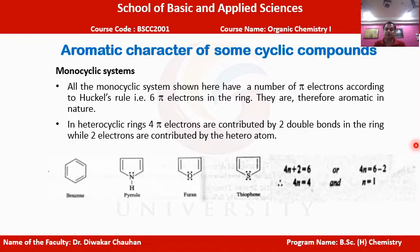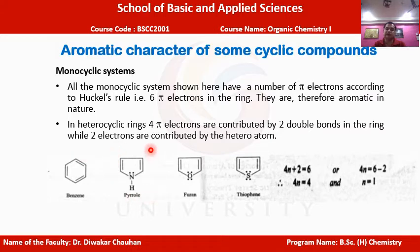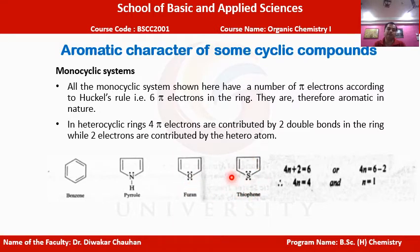Now let us discuss the aromatic character of monocyclic systems. Monocyclic systems are those in which atoms combine to form a closed cyclic ring, as in benzene. Heterocyclic compounds like pyrrole, furan, and thiophene are also monocyclic systems — four corners represent carbon atoms, while the fifth member is nitrogen (pyrrole), oxygen (furan), or sulfur (thiophene), all joining to form a closed cyclic ring.